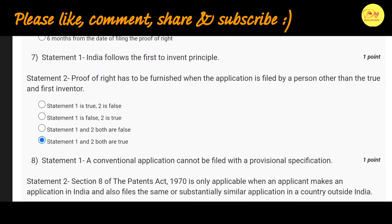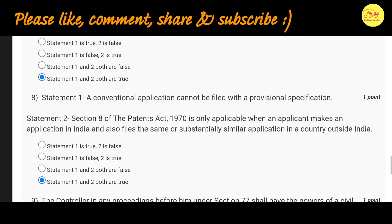Our seventh question is: Statement 1 - India follows the first to invent principle. Statement 2 - proof of right has to be furnished when the application is filed by a person other than the true and first inventor. The correct option is D, Statement 1 and 2, both are true.